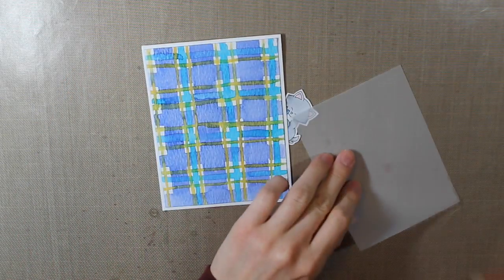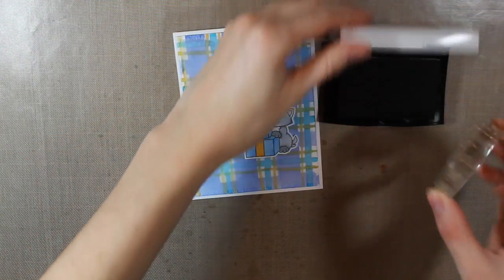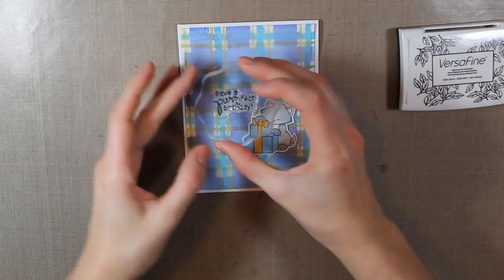And then I'm going to take a piece of vellum and just attach that onto my plaid. That kind of softens and tones down the background. And then it won't matter as much if you make any mistakes.